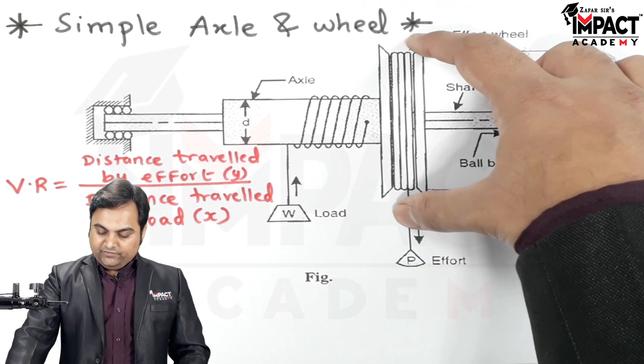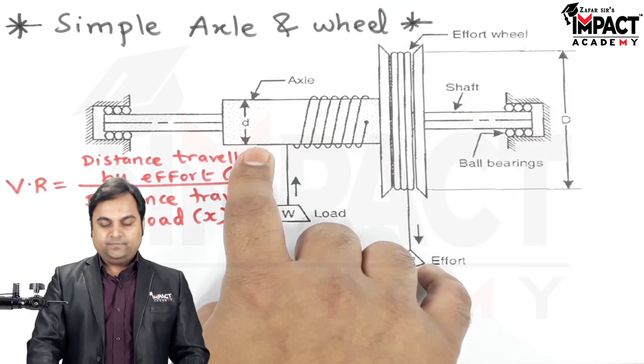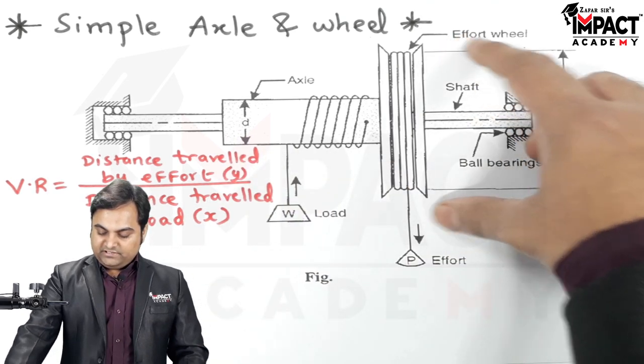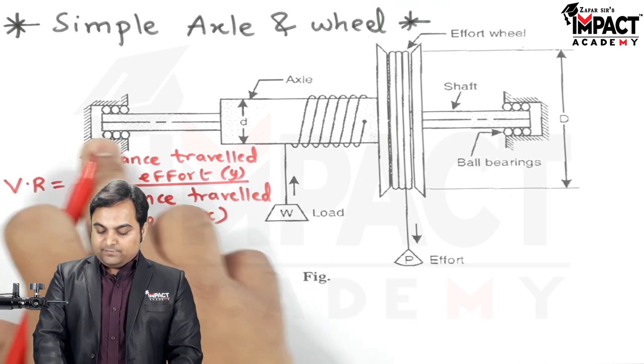Then the effort wheel is also connected with an axle as we can see here. This axle is having diameter of small d. The effort wheel is having diameter of capital D as we can see here and they are mounted on the same shaft.